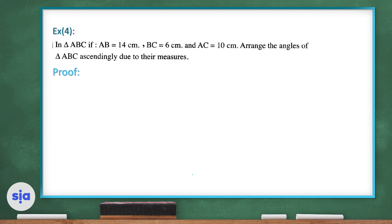Exercise number 4: In triangle ABC, if AB is 14 cm, BC is 6 cm, and AC is 10 cm, arrange the angles of triangle ABC ascendingly by their measures. Since BC is smaller than AC, therefore the measure of angle A is smaller than the measure of angle B — call this inequality number 1.